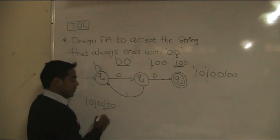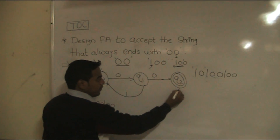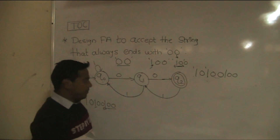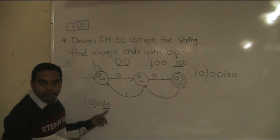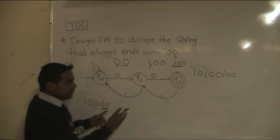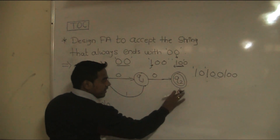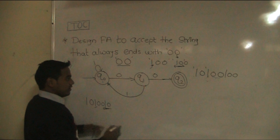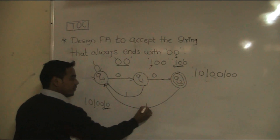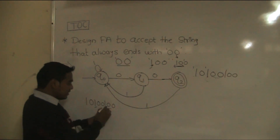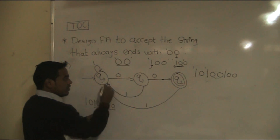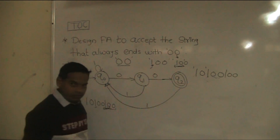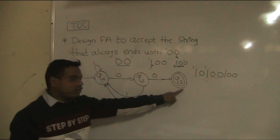At q2 state, suppose 1 occurs. If we allow a transition from q2 on 1 to q1, then a string ending with 10 could be accepted, conflicting with the problem. So at q2 state, when 1 occurs, it should go to q0. Then 0 occurs → goes to q1; then 0 occurs → goes to q2. So the string is accepted when it ends with 00. At q2 state, 1 transition: q2 on 1 goes to q0. This is completed.